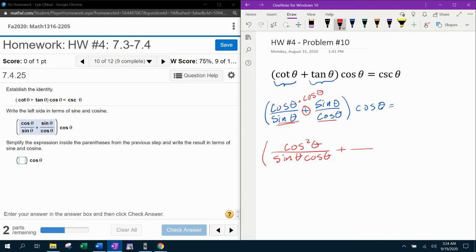And then for the other fraction using the common denominator, sine theta, cosine theta, for this denominator, it had cosine. I gave it a sine. If I give it to the bottom, I have to give it to the top. So that numerator will be sine theta times sine theta, which will simplify to sine squared theta.